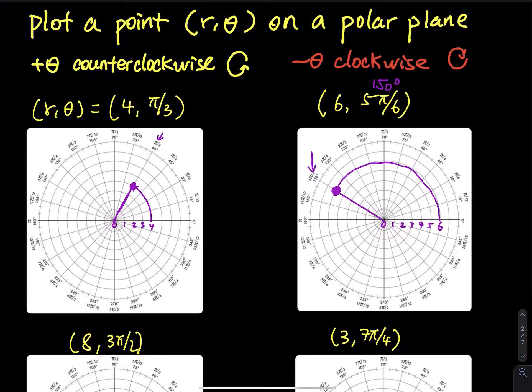In some polar planes they don't mark the angles at all. In some they only give you the degree, in others only the radian. This is the best because it has both.